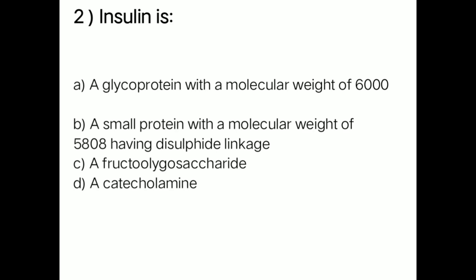Next question: insulin is — option A: a glycoprotein with a molecular weight of 6000; option B: a small protein with a molecular weight of 5808 having disulfide linkage; option C: a proteo-oligosaccharide; option D: a catecholamine. The right answer is option B — a small protein with a molecular weight of 5808 having disulfide linkage.